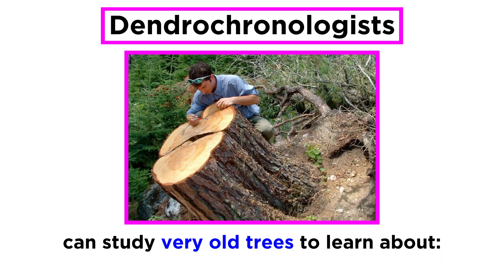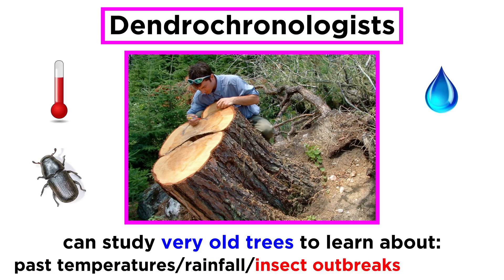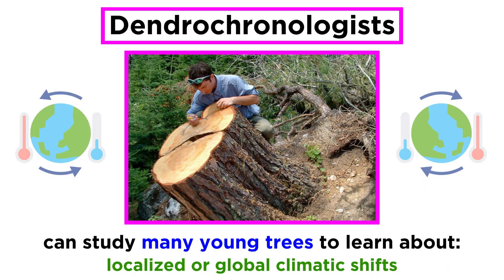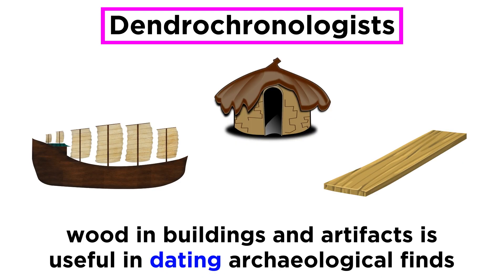Dendrochronologists can study very old trees to learn about past temperatures, rainfall, insect outbreaks, fires, and other environmental disasters. They can also study large numbers of relatively young trees to reveal information about localized or global climatic shifts. In addition, wood from long-dead trees, whether in houses, barns, roads, or ships, can be used to expand existing chronologies further back in time and date archaeological finds.